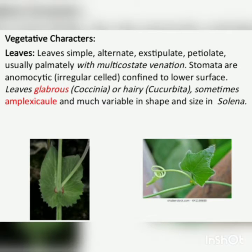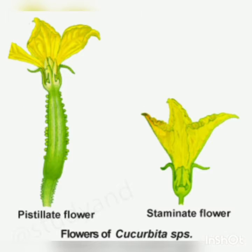Coming to the leaves. Leaves are simple, alternate, exstipulate, petiolate, usually palmately lobed with multicosted venation. Stomata are anemocytic, confined to the lower surface. Leaves are glabrous or hairy, sometimes amplexical and much variable in shape and size.